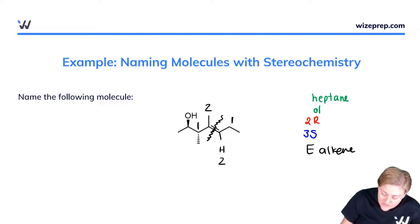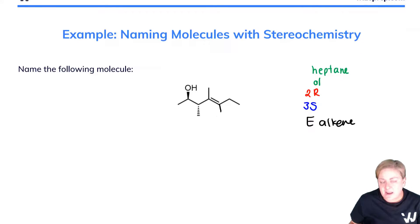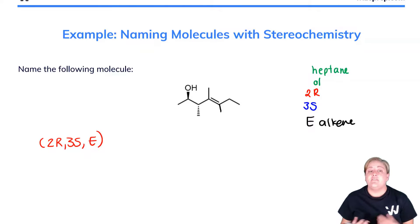All right. Now we can erase all of this. And now we can assemble this name in full. It's going to be quite complicated, but we have all the tools we need. We start the name by indicating the stereochemistry. We have a 2R,3S,E. Now we don't need to say 4E because there's only one alkene. So when we say E, it's implied that it belongs to the alkene that's there.